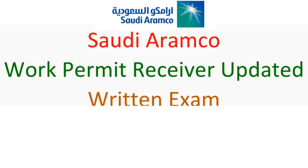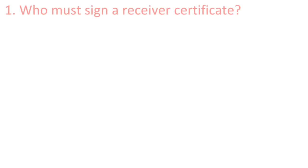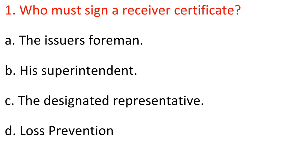Saudi Aramco work permit receiver updated written exam question and answers, Part 5. Question 1: Who must sign a receiver certificate? A) The issuer's foreman, B) His superintendent, C) The designated representative, D) Loss prevention. Answer: B) His superintendent.